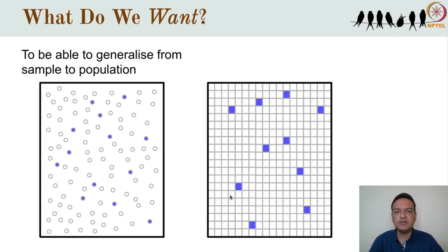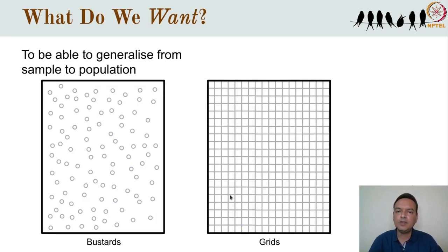Regardless of the specific task, we need to be very clear on what we are trying to do in a broad sense. In almost all situations, we want to understand some larger population through our sample. The population is the larger frame to which we want to generalize. Since we typically can't measure the entire population, we take a sample and try to design our sampling strategy such that the sample is representative of the population.